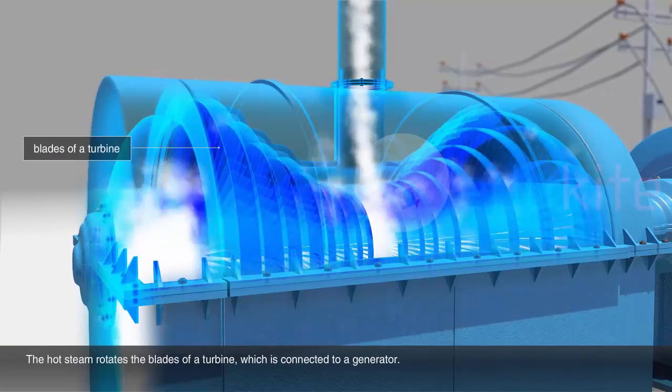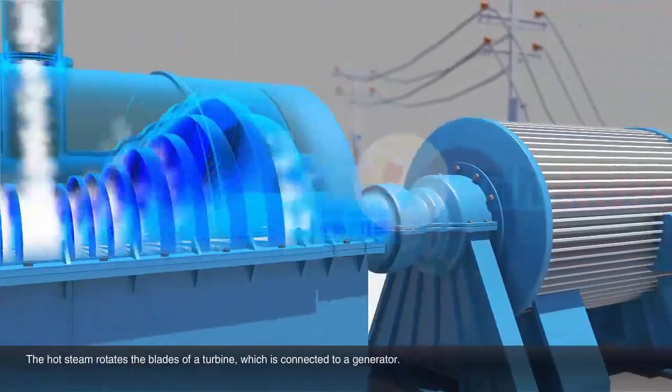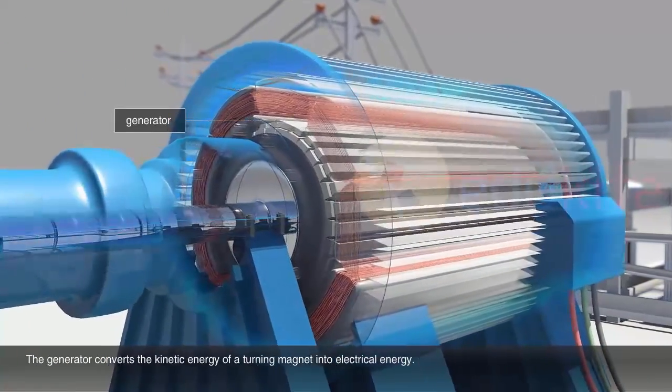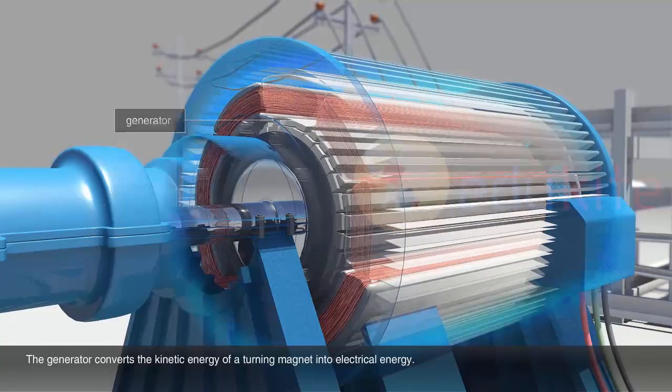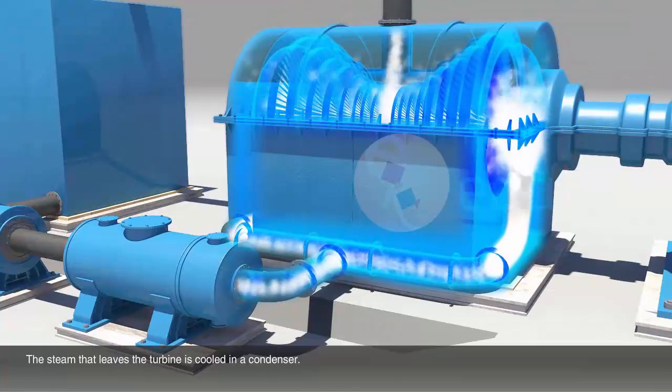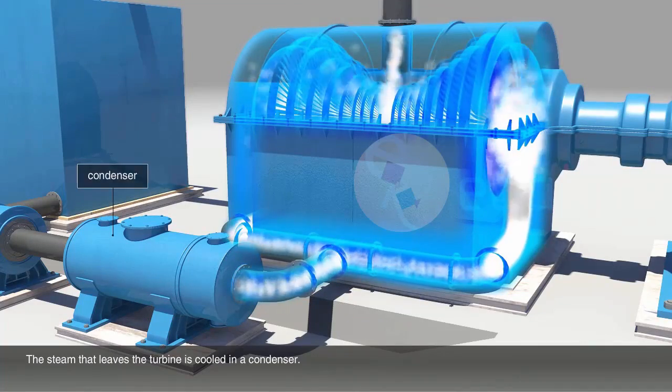The hot steam rotates the blades of a turbine, which is connected to a generator. The generator converts the kinetic energy of a turning magnet into electrical energy. The steam that leaves the turbine is cooled in a condenser.